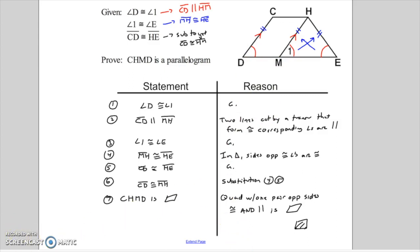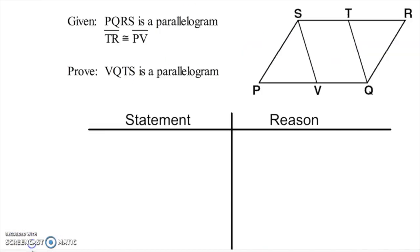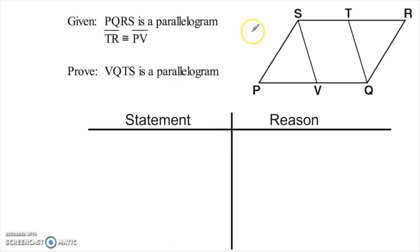Let's take a look at another one. Here's a second proof — you can pause the video and give yourself a minute to draw the picture so you can work along with me. They're telling us that the large quadrilateral PQRS is a parallelogram, so I get all six properties of a parallelogram to play with. They're also telling me that TR is congruent to PV. They want me to prove that a smaller quadrilateral inside is also a parallelogram.